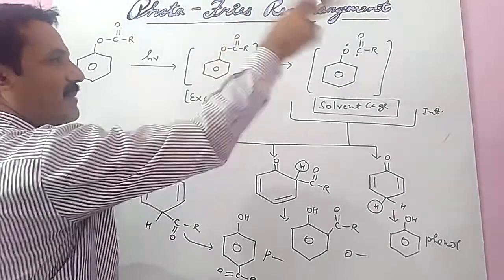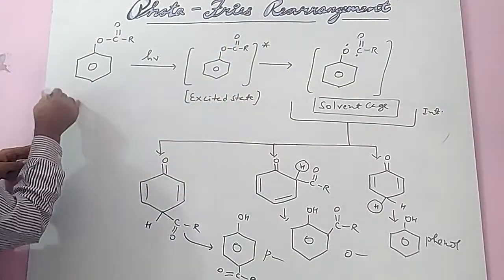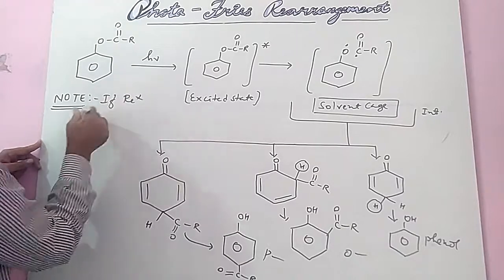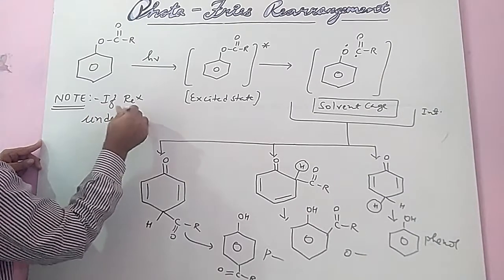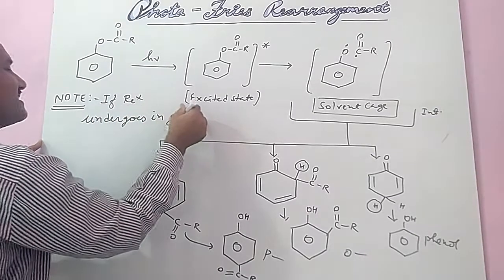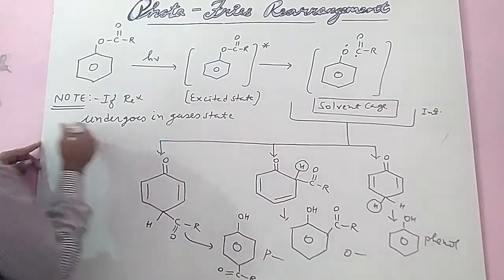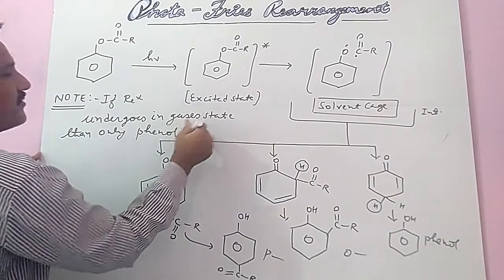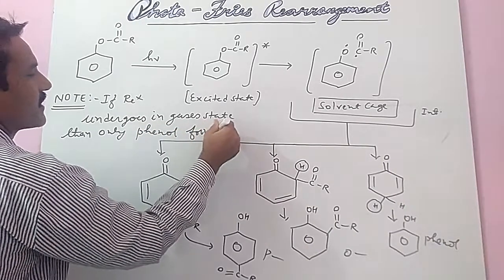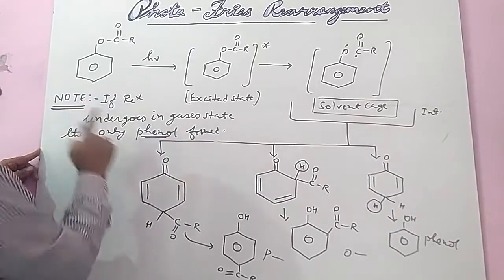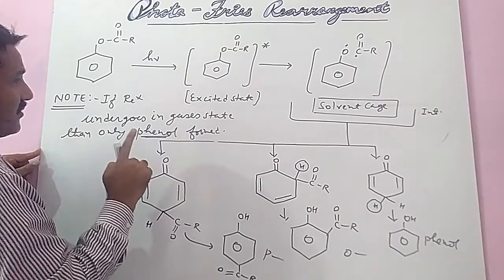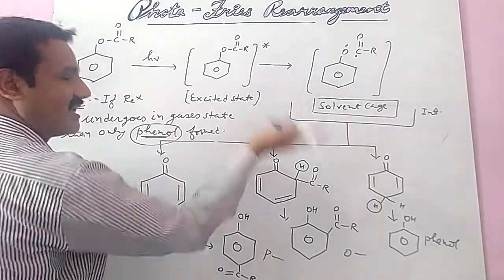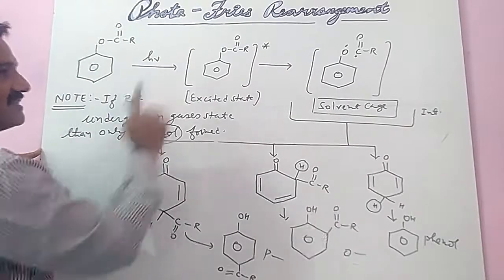But in general Fries rearrangement, only ortho and para hydroxy ketones are formed. A very important note: if the reaction undergoes in the gaseous state, then only phenol is formed — not the ortho and para products. This clearly indicates the formation of the solvent cage occurs only in solution, not in the gas phase.